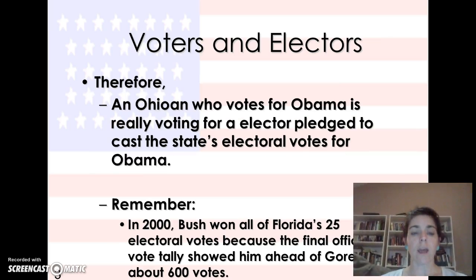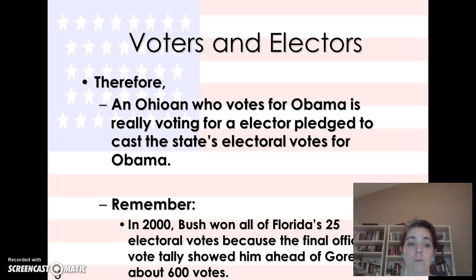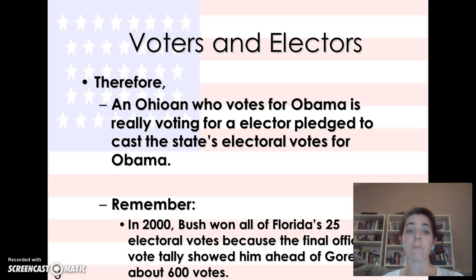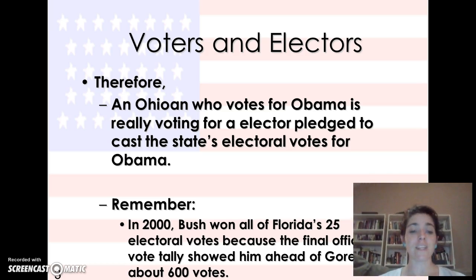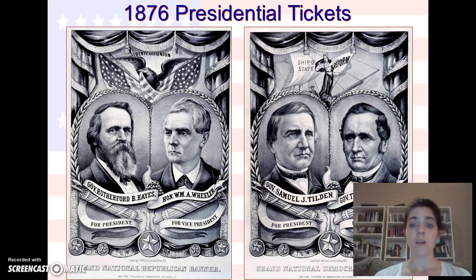So an Ohioan who votes for Obama is really voting for an electoral pledge to cast the state's electoral votes. When I voted for Obama in 2012, I was placing a vote so that Obama could win the popular vote in Tennessee and our electoral votes would go toward him. It's confusing — if you didn't understand it, type 'Electoral College' on YouTube and there's a two-minute video; I'll also post it on Edmodo. In 2000, Bush won all of Florida's 25 electoral votes because the final official vote tally showed him ahead of Gore by only 600 votes, but that pushed him over to win.